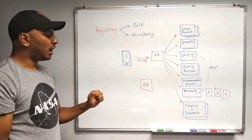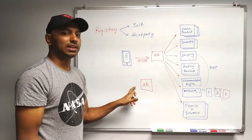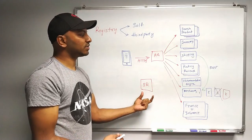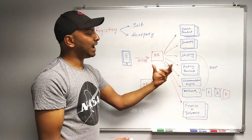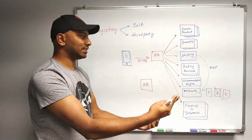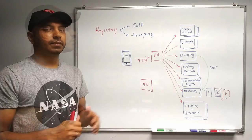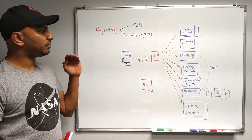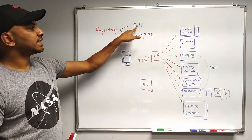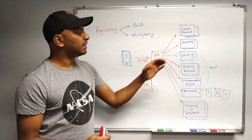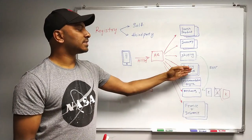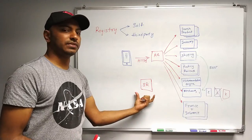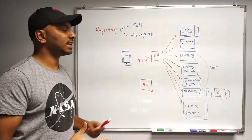So now how does the service registry get the latest network address of any microservice instance? There are two ways the service registry can work. The first one is self-registry. It means that the microservices automatically register themselves to the service registry.